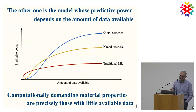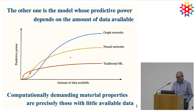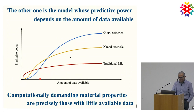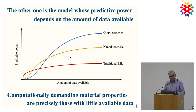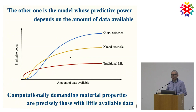The problem with machine learning is that simple approaches like random forest can quickly give a reasonable result with a few data, but if you increase the amount of data, it will not improve that much. If you move to neural networks, it takes more data to get something, but then you can improve the accuracy. If you go to graph networks such as convolutional ones, you can improve accuracy further, but that requires even more data. The properties for which we would like to use machine learning are precisely those for which we have few data.